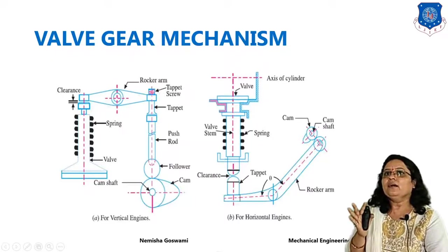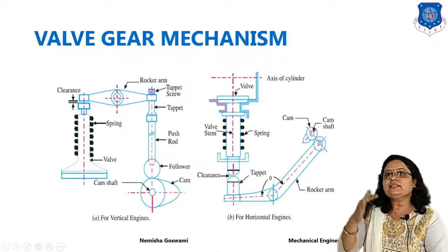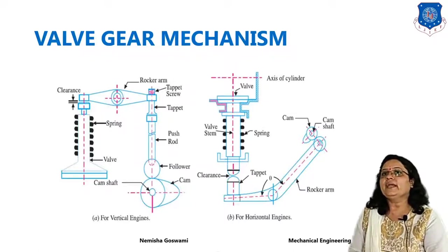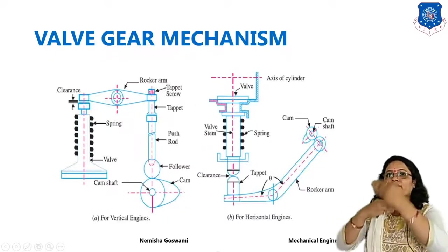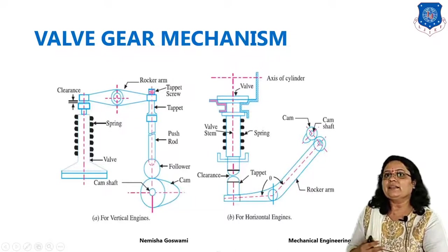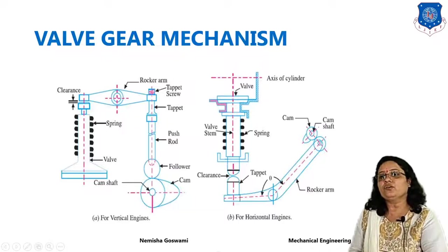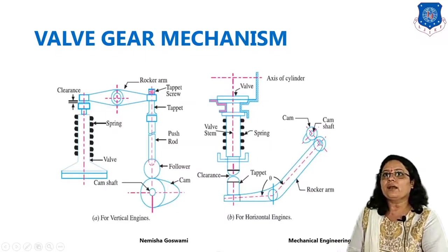The basic parts are: a tappet screw, rocker arm, and finally spring and valve. When the cam rotates — it is mounted on the camshaft — the camshaft moves the cam, which transfers motion to the follower. That motion transfers to the push rod, then to the tappet screw, and then to the rocker arm. The rocker arm transfers the force and provides compression.